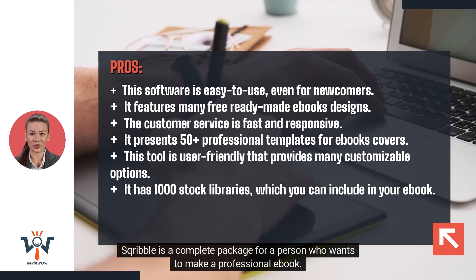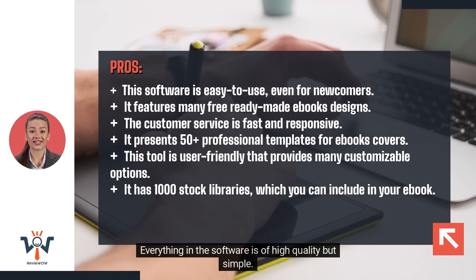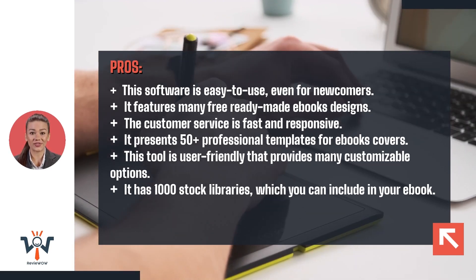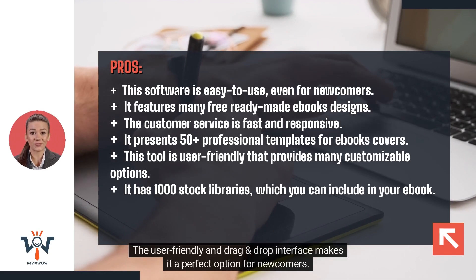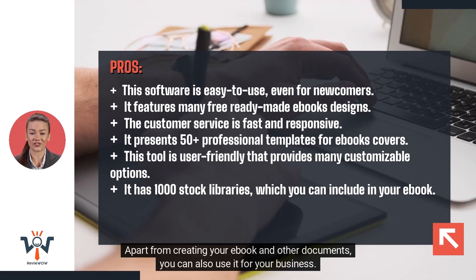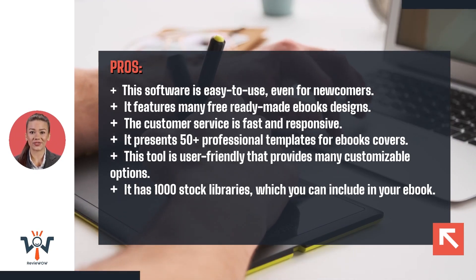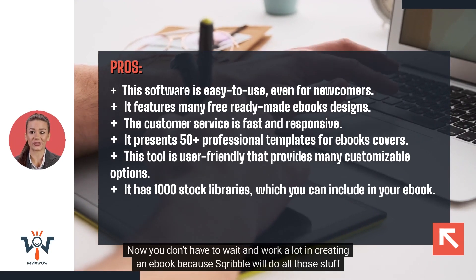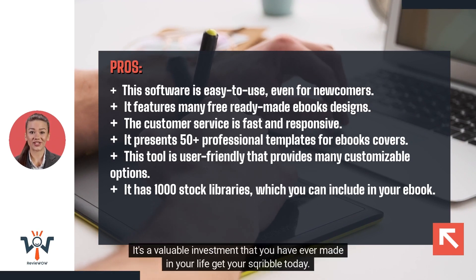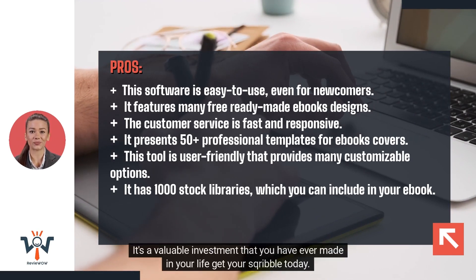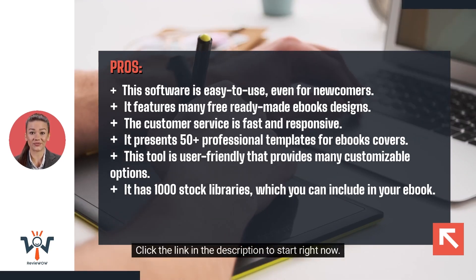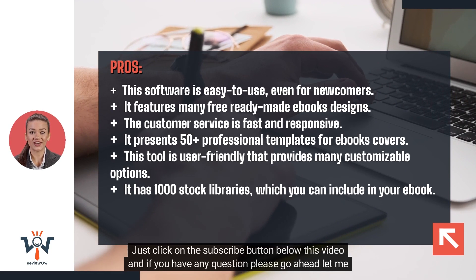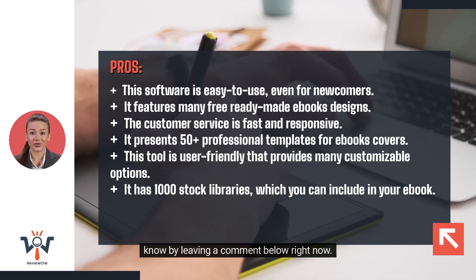Scribble is a complete package for a person who wants to make a professional ebook. Everything in the software is of high quality but simple. It has many award-winning templates that are going to make your ebook cover look elegant. The user-friendly and drag-and-drop interface makes it a perfect option for newcomers. Apart from creating ebooks and other documents, you can also use it for your business — you can sell ebooks and designs to other users and keep all the profit. Now you don't have to wait or work a lot to create an ebook because Scribble will do all that for you. Click the link in the description to start right now, and if you have any questions, please leave a comment below.